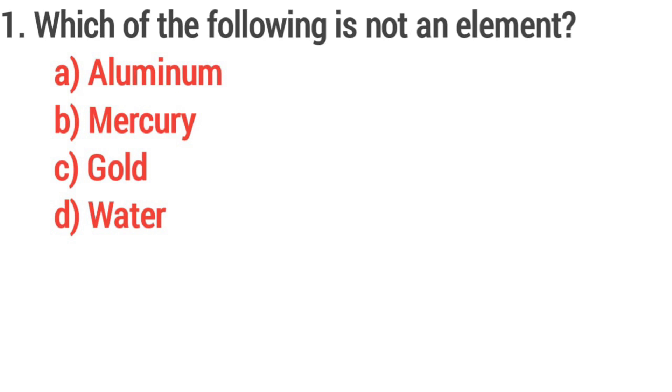The first question: which of the following is not an element? Option A: aluminum, option B: mercury, option C: gold, option D: water. Answer: option D, water.